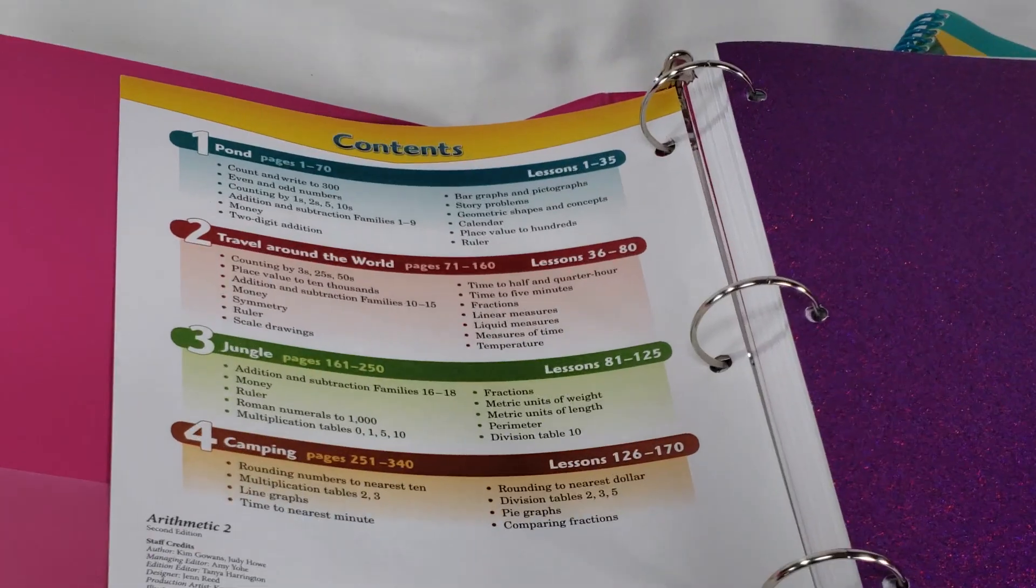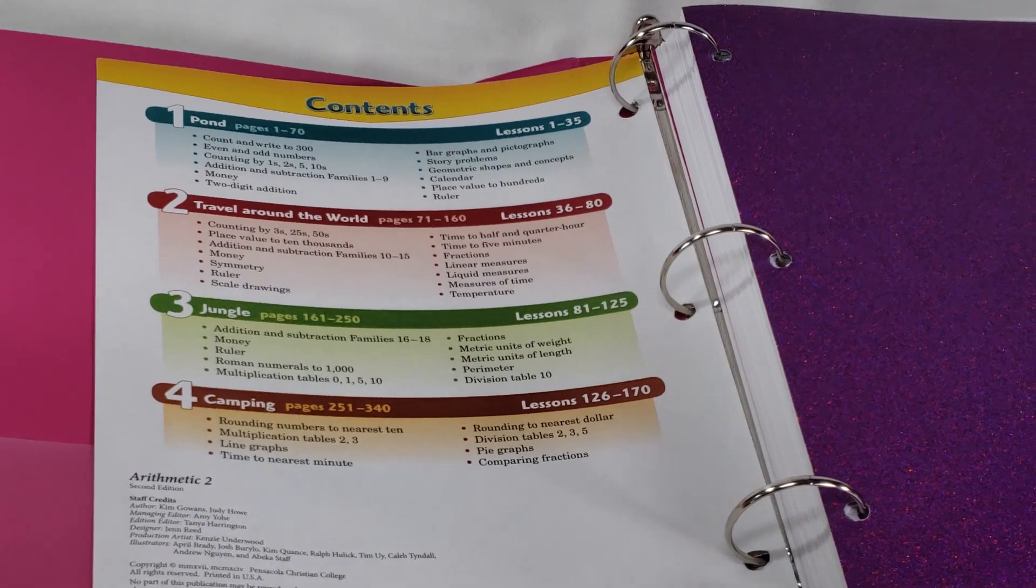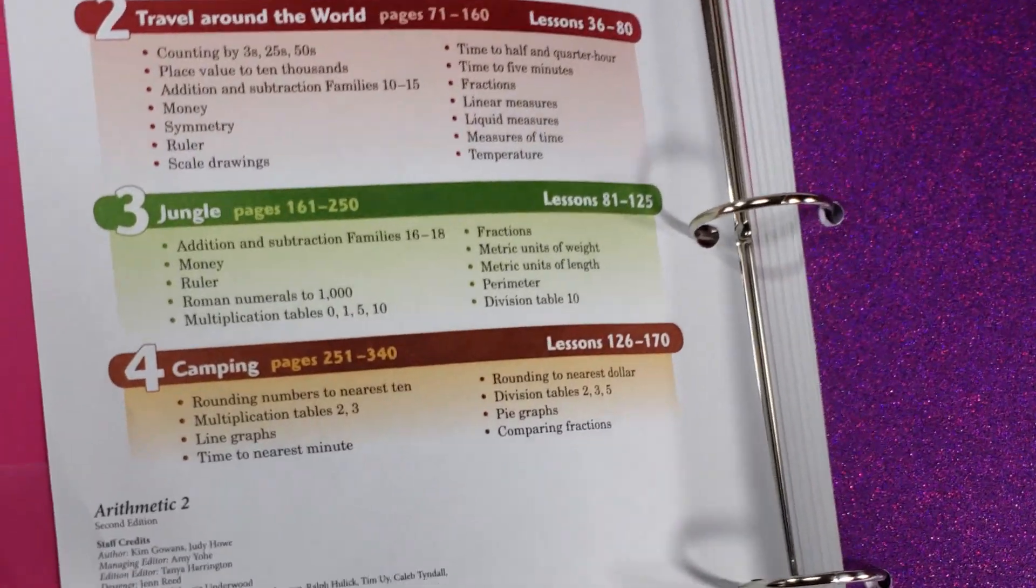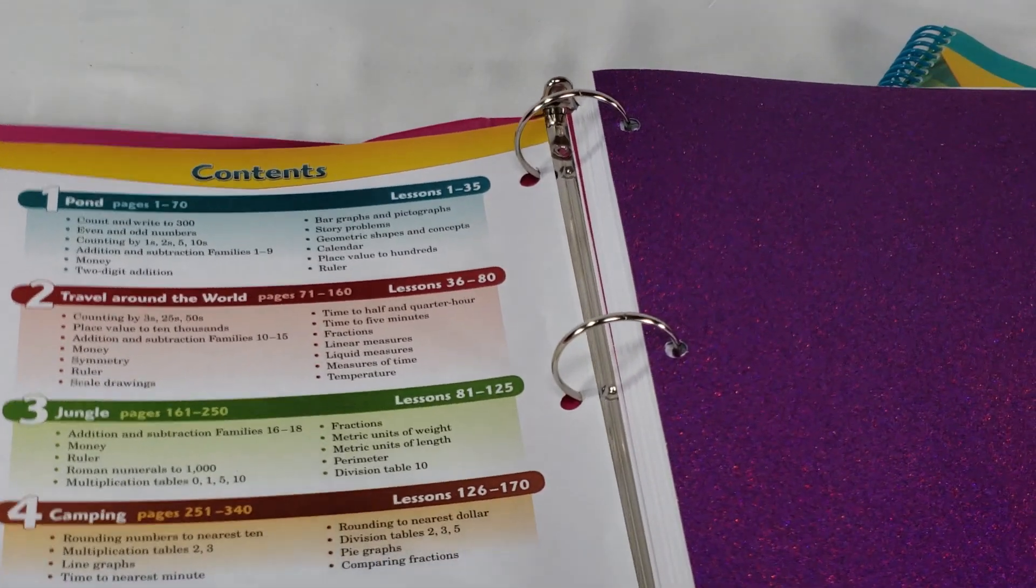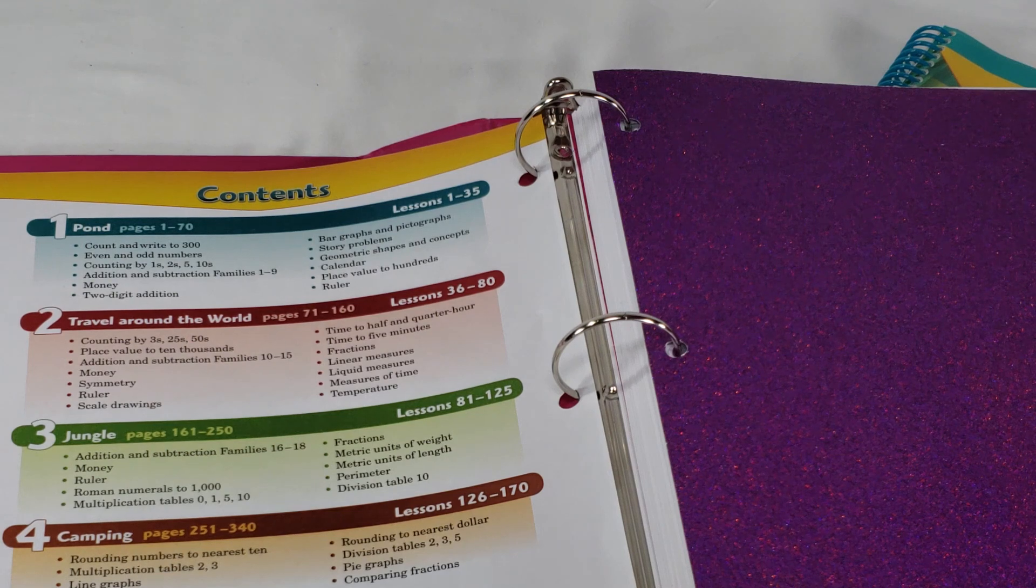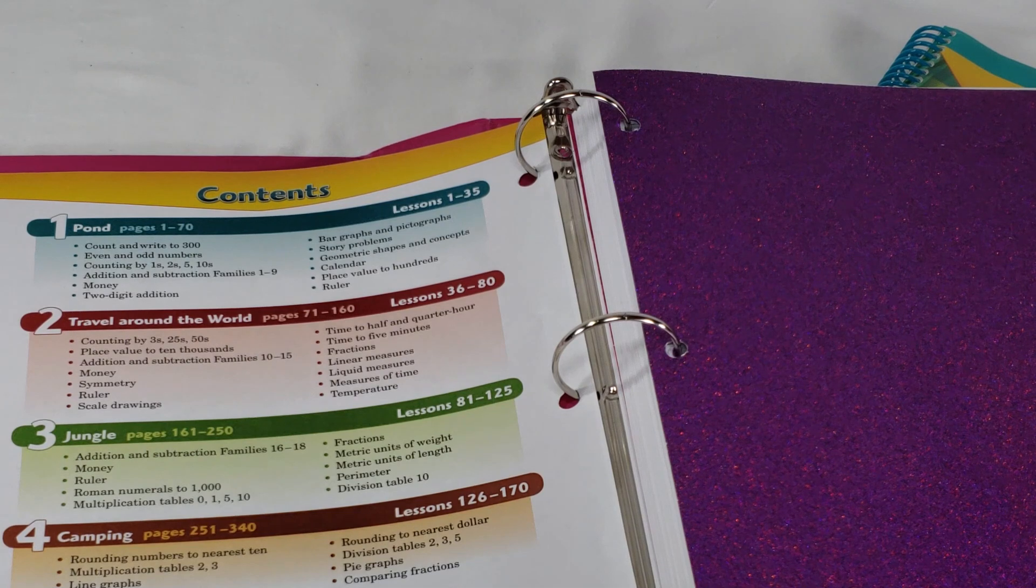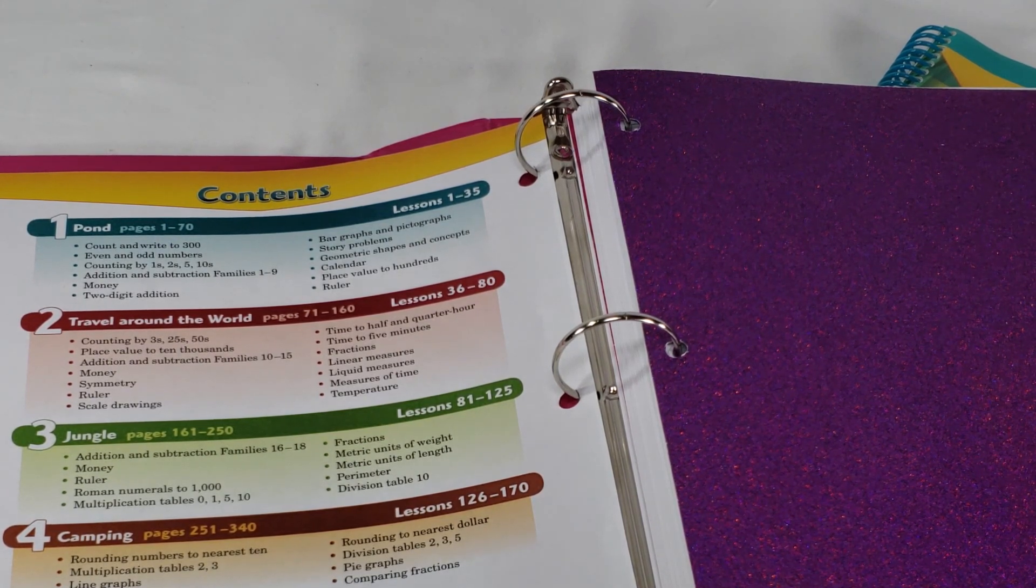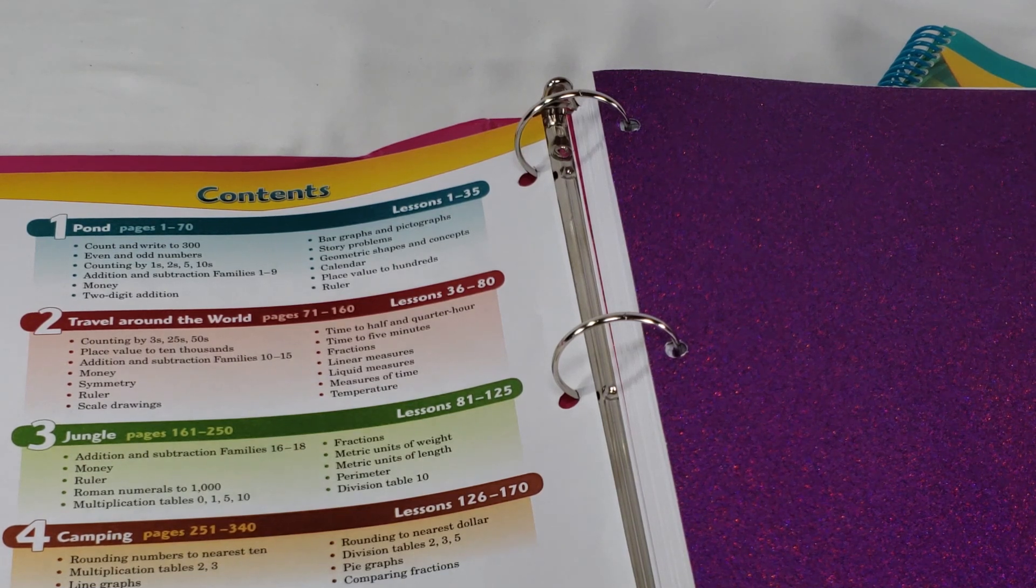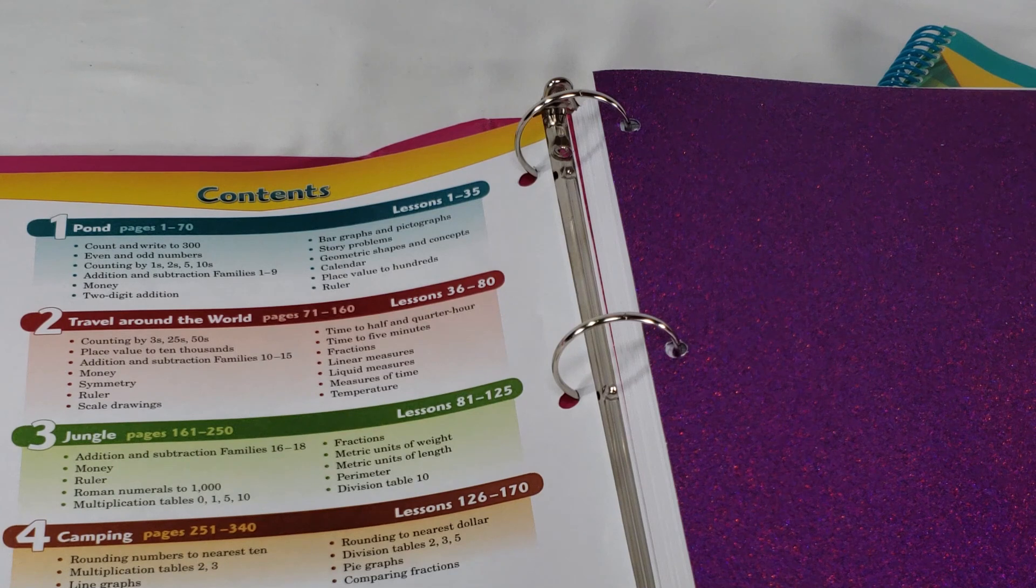However, if you look at the table of contents here, you can see that it does pick up rather quickly. By the end, you're doing multiplication and division, addition and subtraction families through 18, Roman numerals to a thousand, line graphs and time, different types of graphs and fractions, linear measurements, measurements of time, rulers, and metric units.